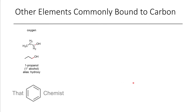Now let's talk about some of the more interesting functional groups. Instead of just carbon-carbon or carbon-hydrogen bonds, it's possible to have carbons bound to other elements such as oxygen. Here I have 1-propanol, which is a primary alcohol. The degree symbol indicates whether something is primary, secondary, tertiary, etc. These alcohols are occasionally referred to as hydroxy or hydroxyl groups, but for the most part we refer to them as alcohols.